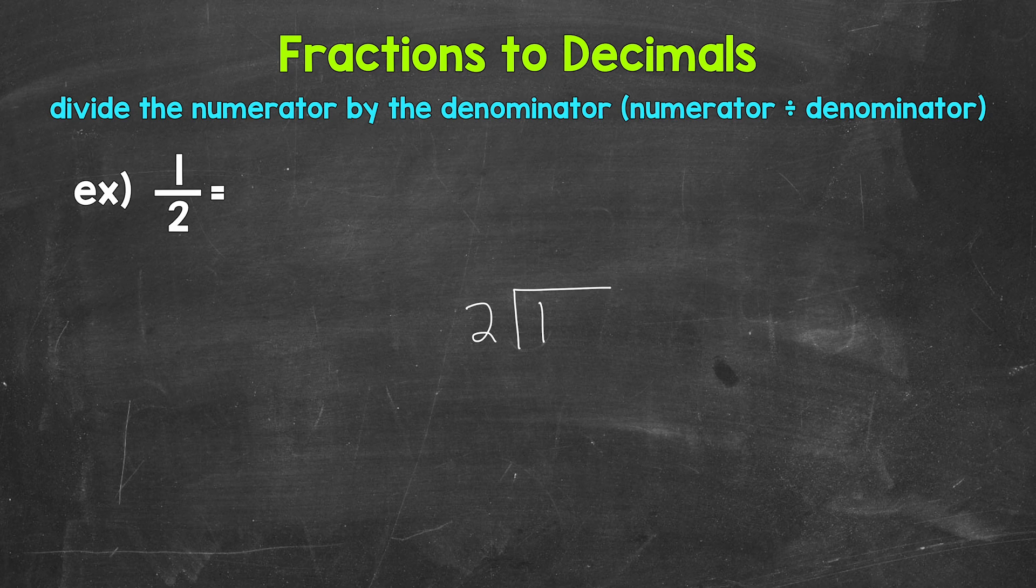Well, we can't do that. So we need a decimal and a 0 in order to work through this problem. Once we have the decimal and the 0, we can bring the decimal straight up into where the quotient, the answer, will be.